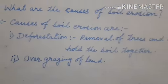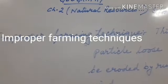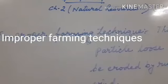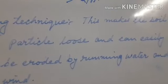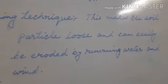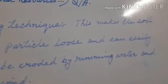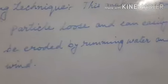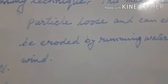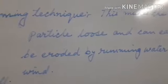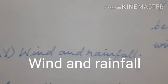Our third point is improper farming technique. Improper farming technique makes the soil particles loose. If we plow the land too much, the soil particles become loose and can easily be eroded by running water and wind.